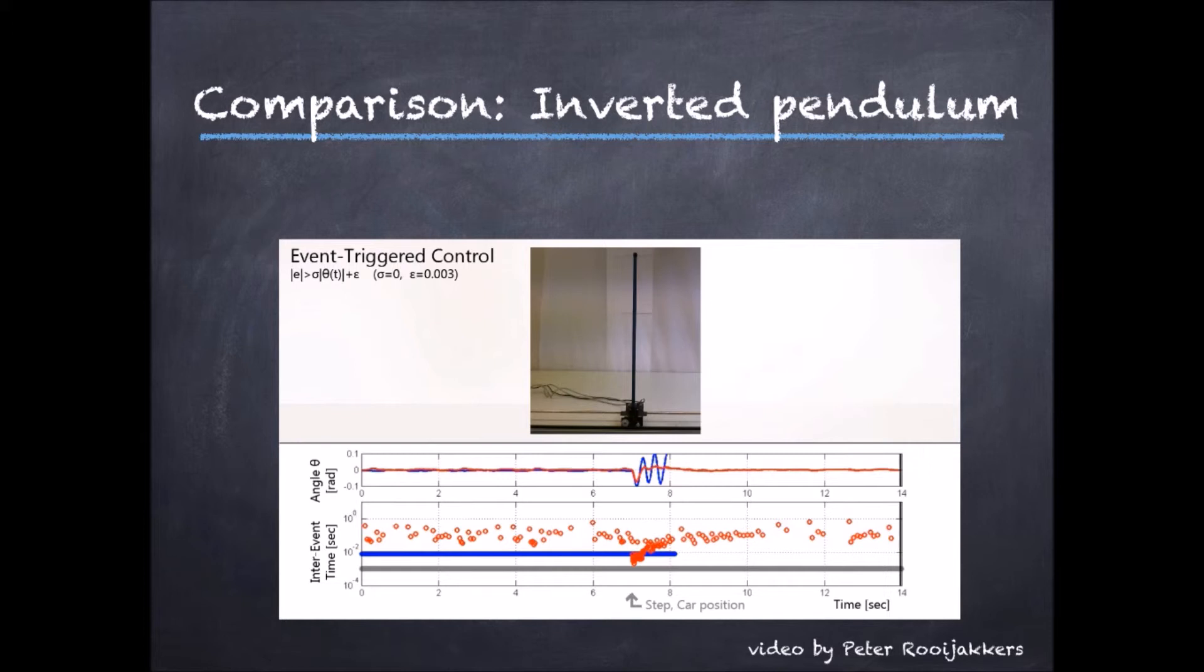Event-triggered control does not need a large sampling rate. When nothing special happens, the number of times it activates the system is small, but when, say, one needs to counteract disturbances, it can act at a fast rate.